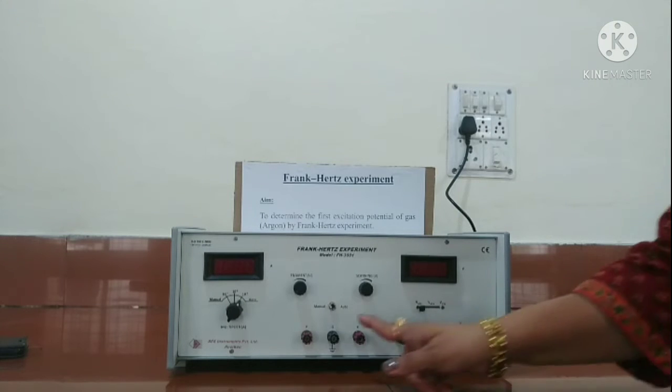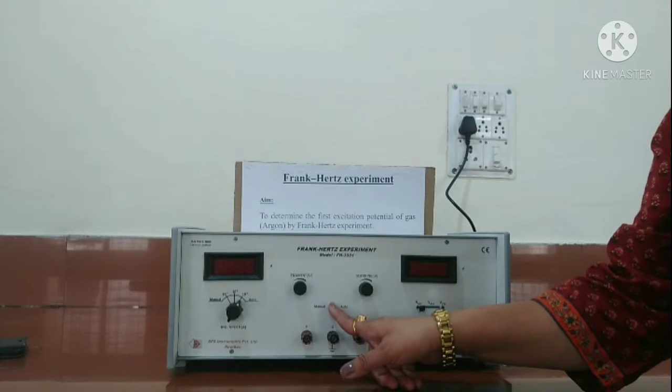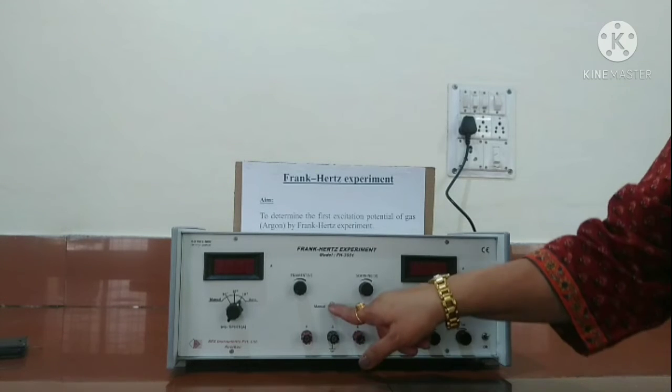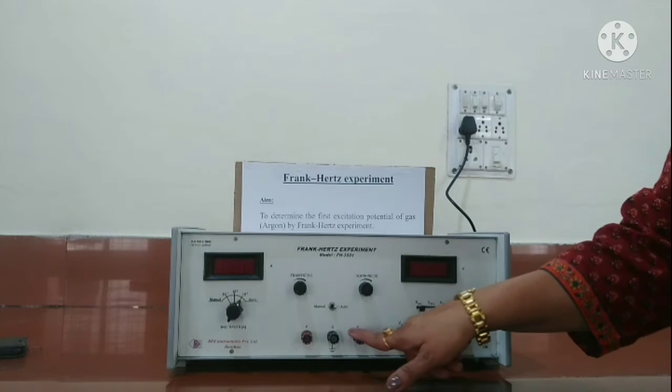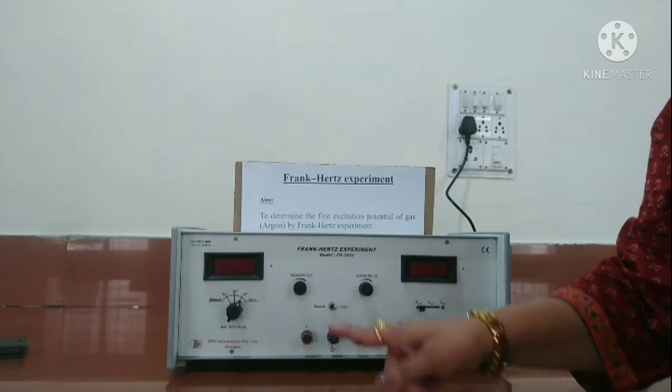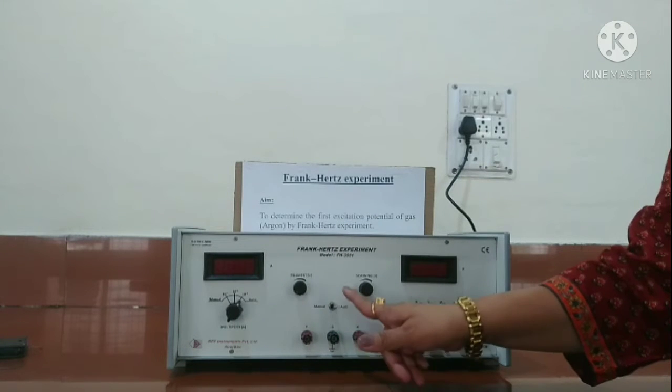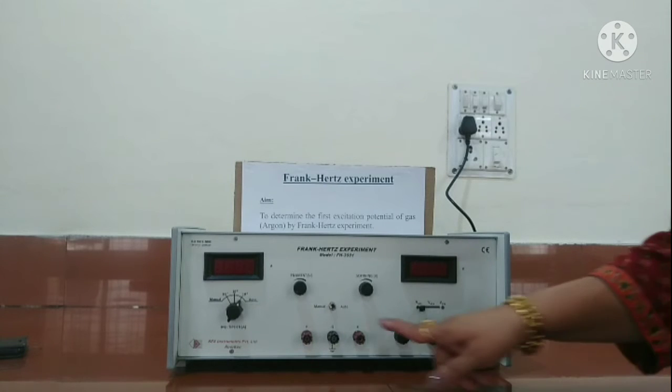We have another switch here which is manual and auto. Generally, we perform the experiment with manual, but with auto we can use the CRO. This is the scanning voltage and these are the three knobs for connecting it to the CRO. Then we can get the waveform on the CRO, but generally we do it with manual.